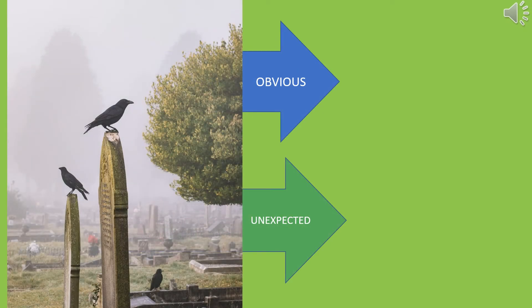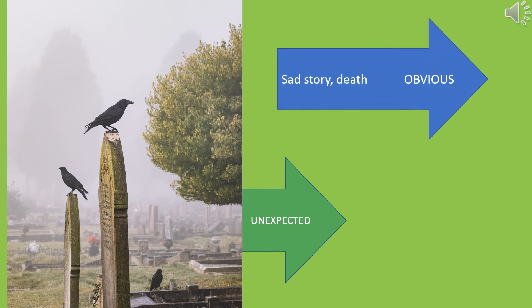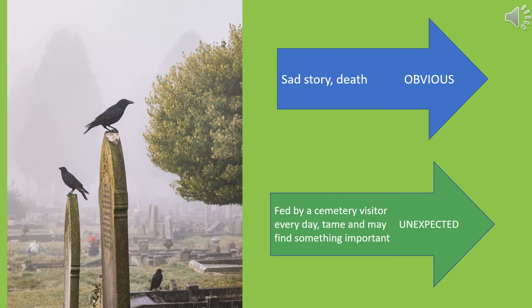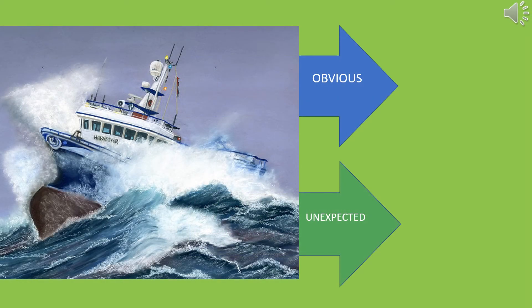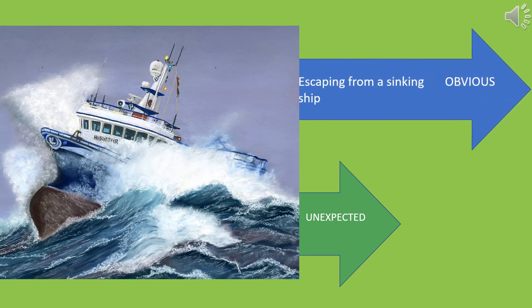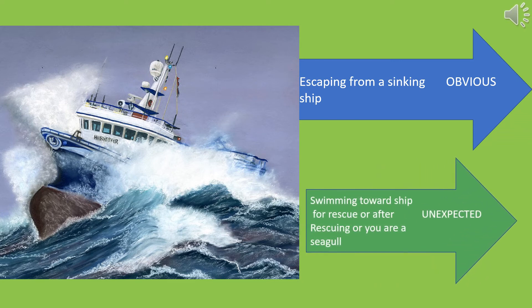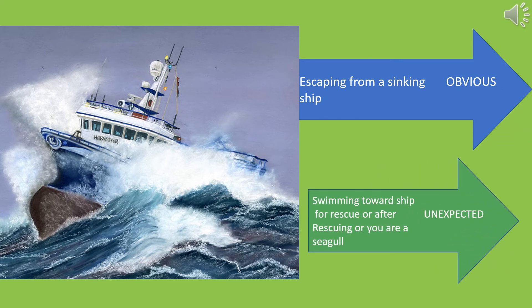What would be the obvious things to write about this picture? What would be unexpected? The obvious would be that the story is sad or about death. The unexpected would be that it's being fed by a cemetery visitor every day — maybe it's tame. Crows are very good at finding things; maybe it could find something important. For the next picture, the obvious would be that someone needs to escape from a sinking ship, but the unexpected might be that someone is swimming towards the ship for rescue or after rescuing — or you're a seagull.